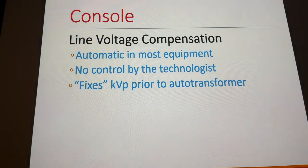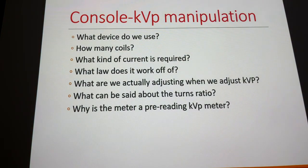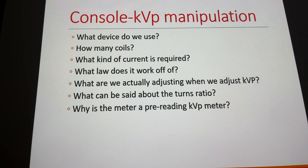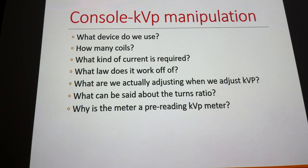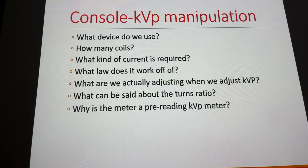We'll talk about line voltage compensation and what that is. At the console, KVP selection uses the auto transformer, which is a rheostat — it only uses one coil. Like any transformer, it has to work off alternating current, and it works off the transformer law.